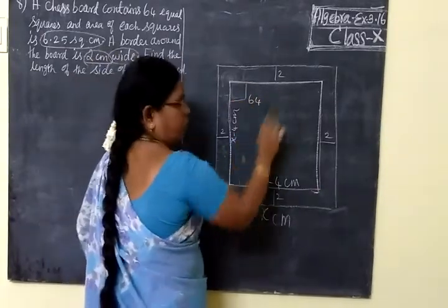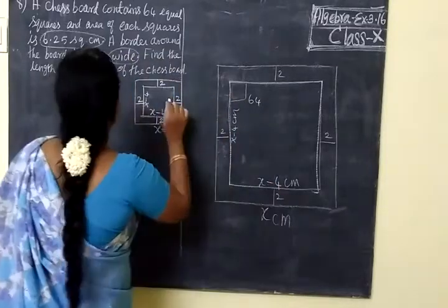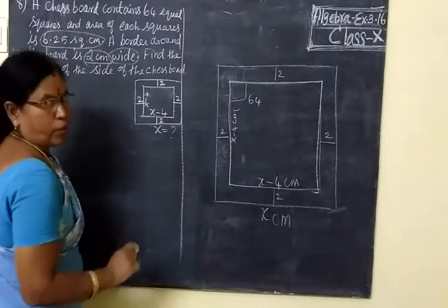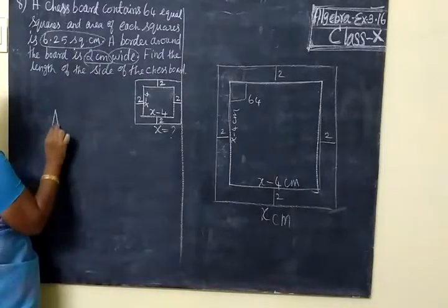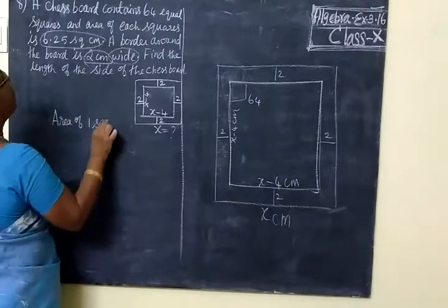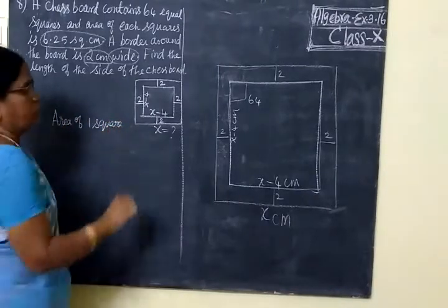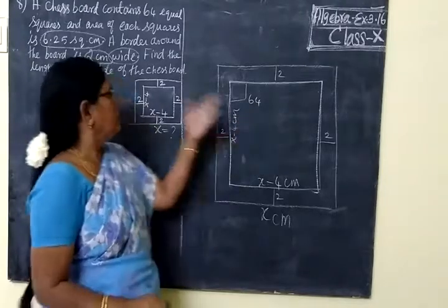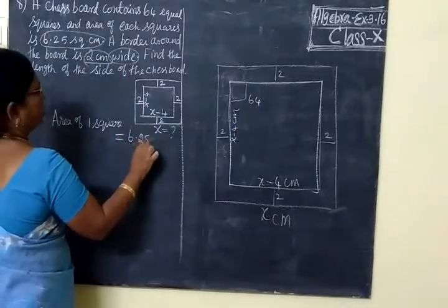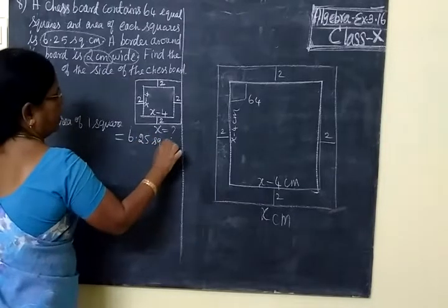The number is 64 equal squares. So, the area is 6.25 square centimeters. So, area of one square is 6.25 square centimeters.